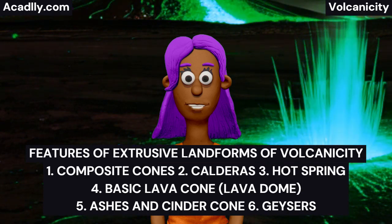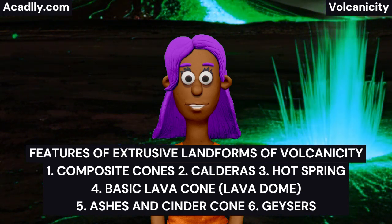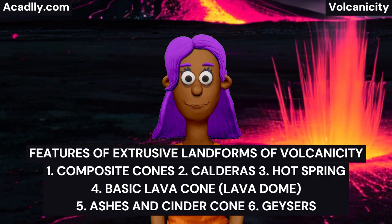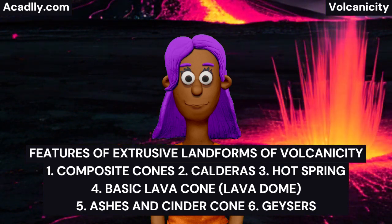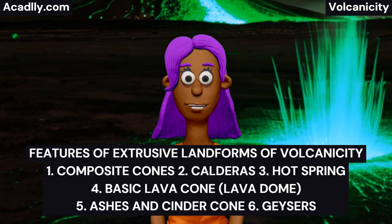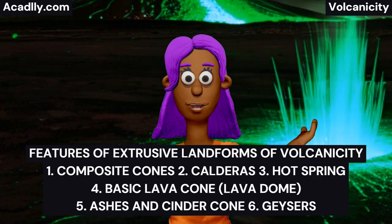Ash and Cinder Cone: These are volcanic cones which are made up of mainly ash and cinder, e.g., Volcan Definado in Guatemala and Ikere in Ekiti, Nigeria. Ash and cinder cones are typically small volcanoes occurring in groups, and rarely exceeding 300 meters in height. Other examples include Mount Nuovo in Italy and Mount Parícutin in Mexico.